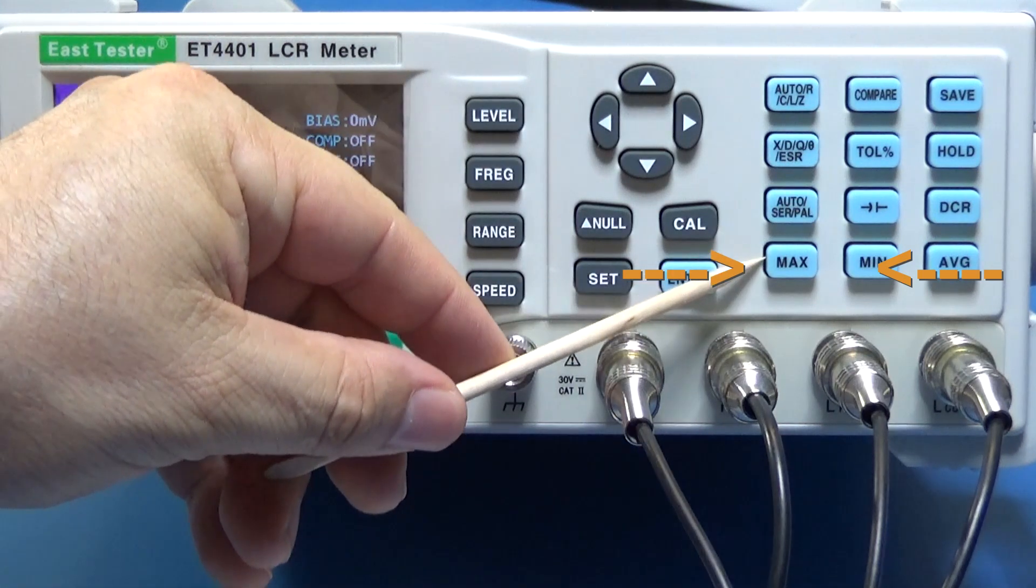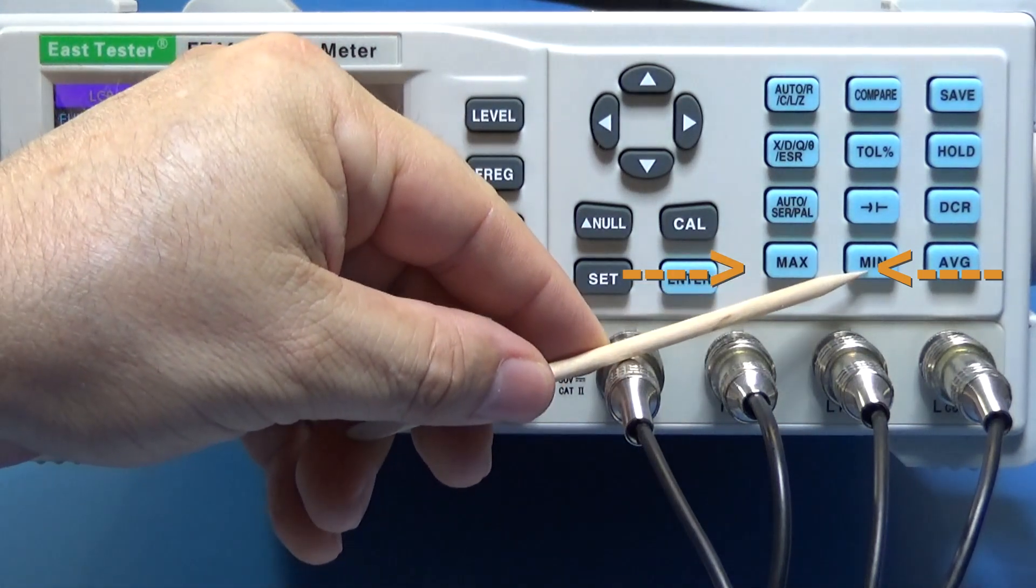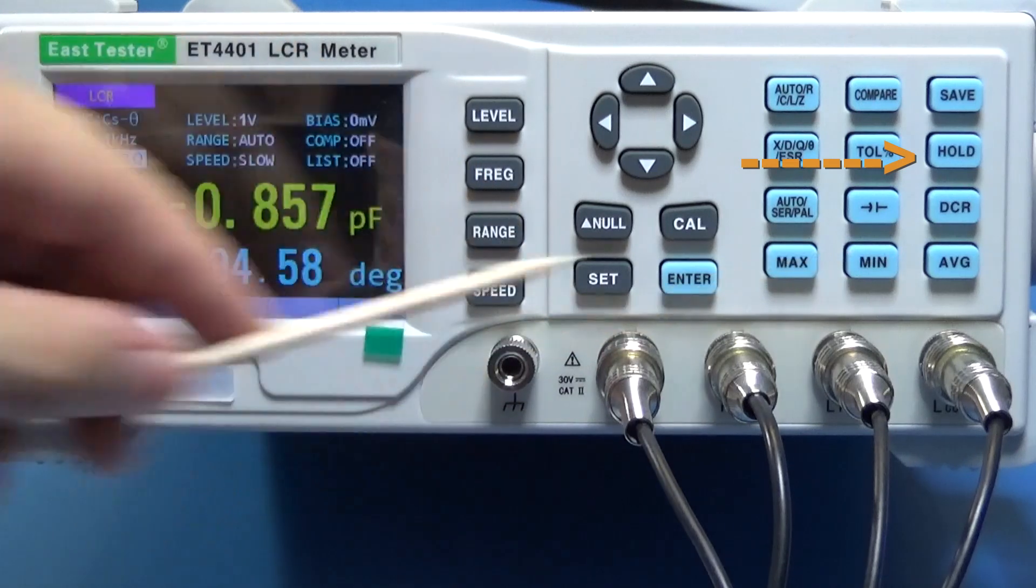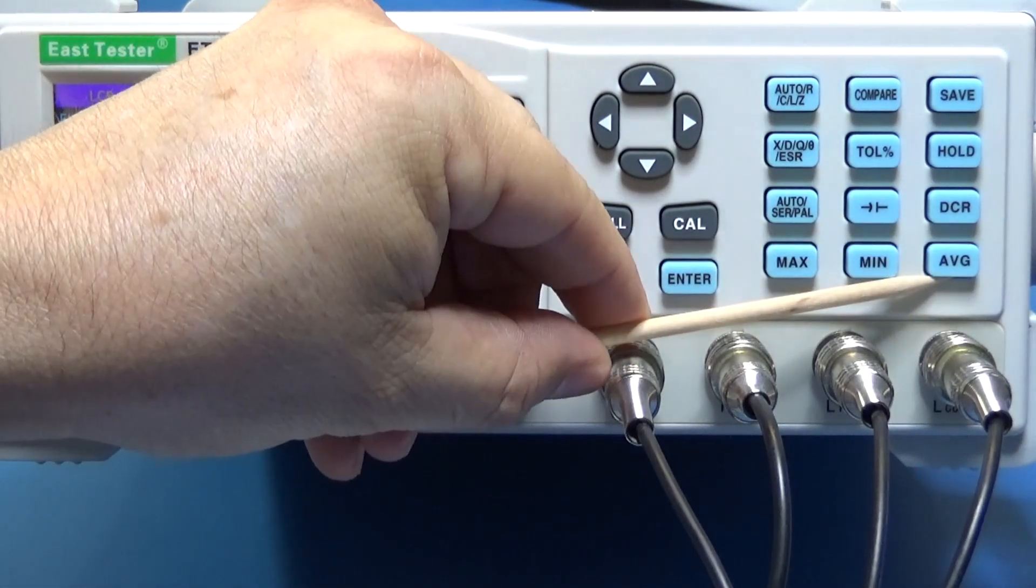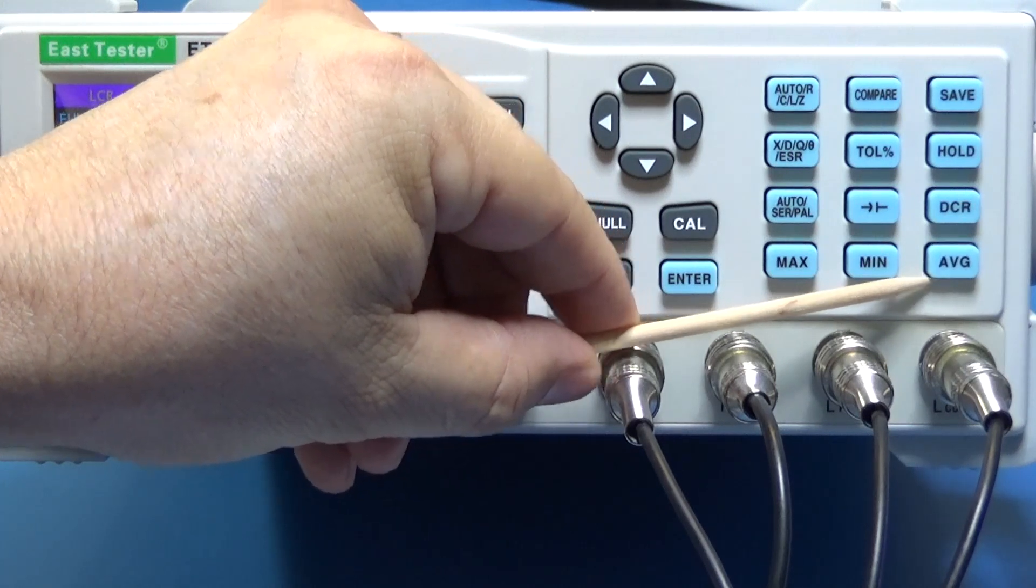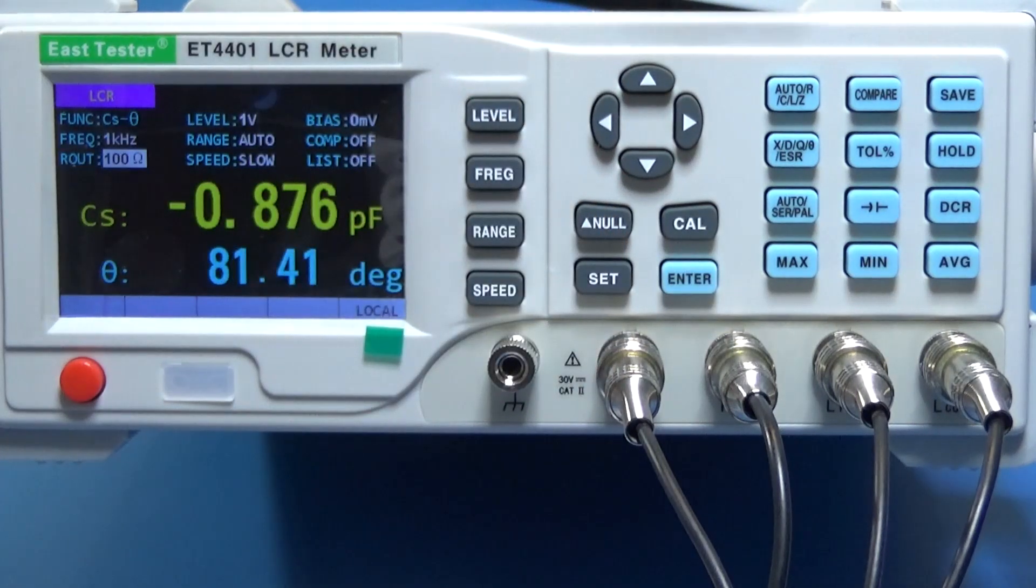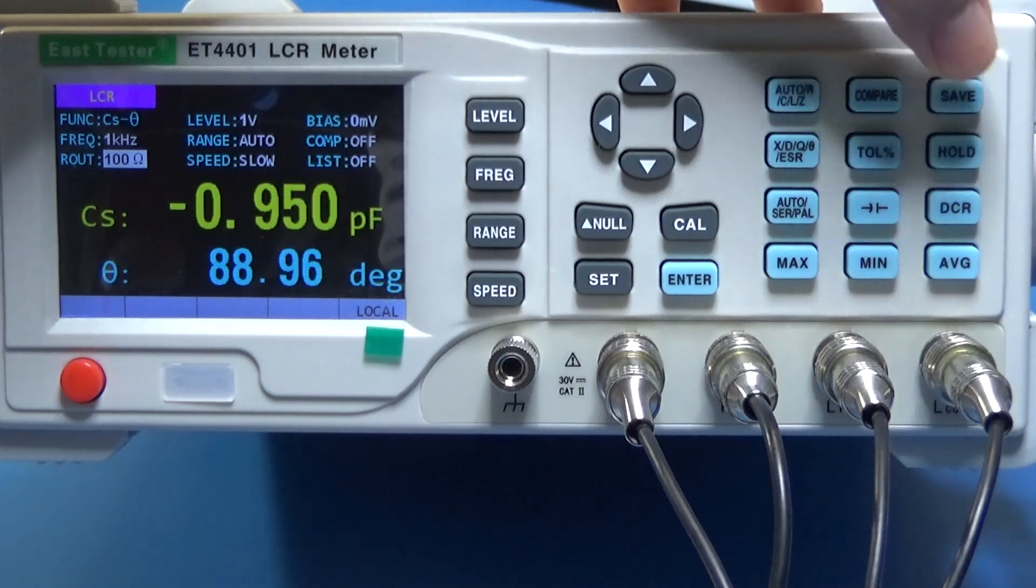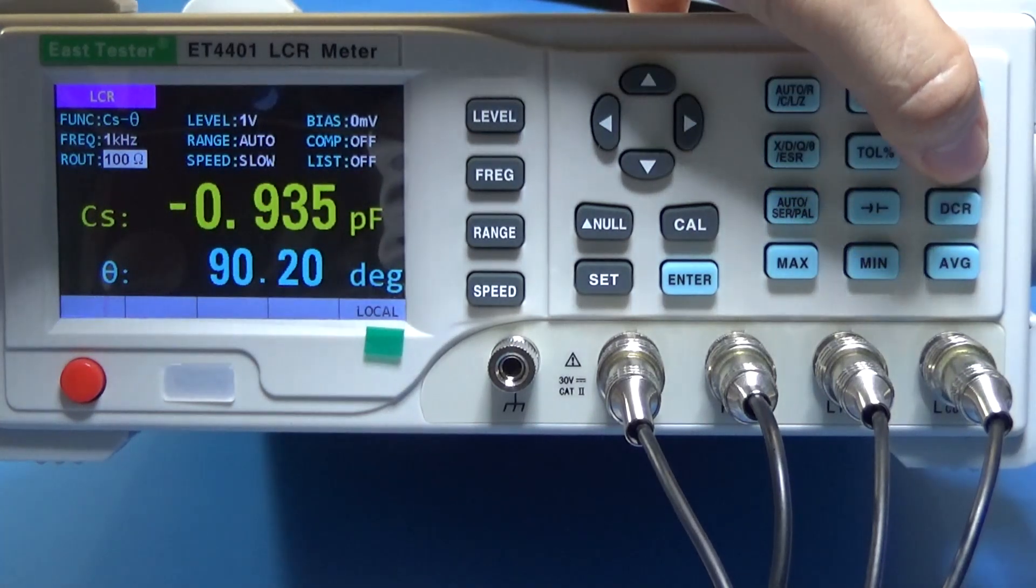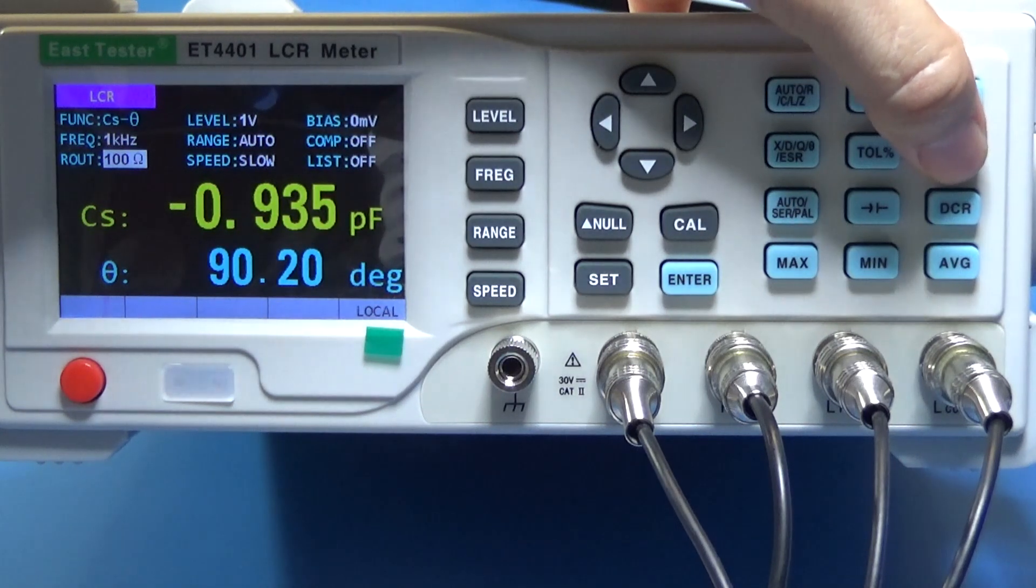Then we have the maximum and minimum, and we can hold and record the value that we are interested for. The device can do average too. We can save the data in a table. Also, we can hold and freeze the measurement on the screen.